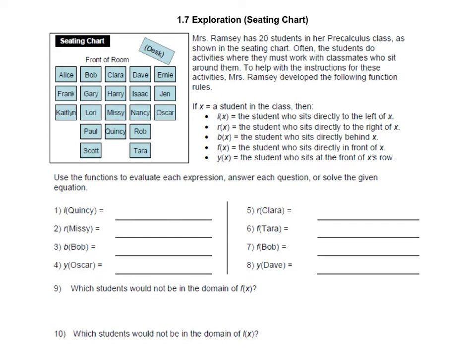All right, let's go over this together. Hopefully you've already attempted the first problems on your own, and if you've got one through eight correct then you will be able to get a ticket. So we've got the seating chart and there are 20 students in this class, and these functions tell us the instructions.